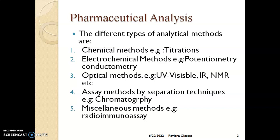In titrations, we take the sample in a burette or conical flask and check the concentration of the particular sample, or standardize it by carrying out reactions with chemical reagents like phenolphthalein or methyl red. By these chemical methods, we analyze the sample, standardize it, and check the amount present.